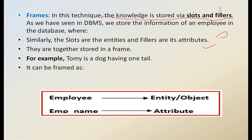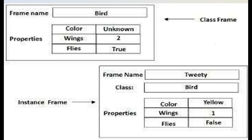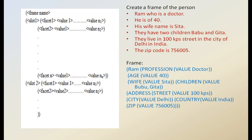Here is another example. Frame name is Bird — a class frame — with slots: wings and flies, and fillers: two and true. The instance of this class is frame name Tweety, which is of class Bird, with slots wings and flies, but the fillers change to one and false. This is the instance frame versus the class frame.